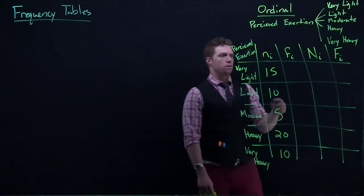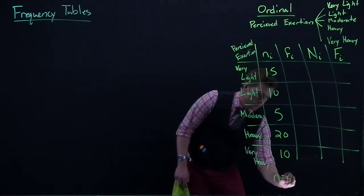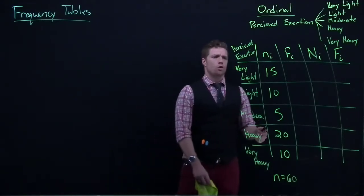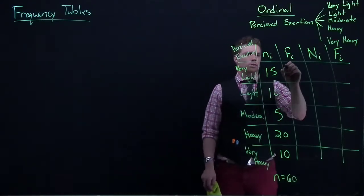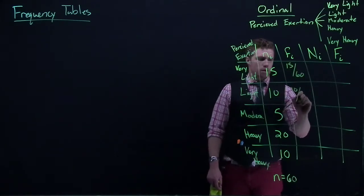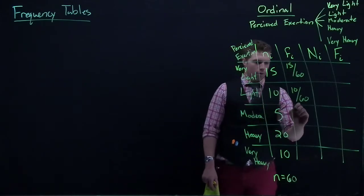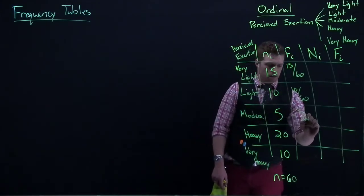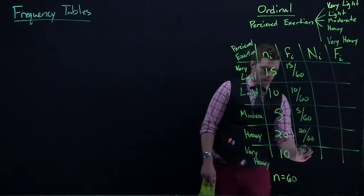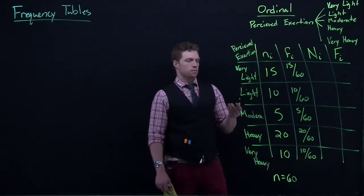So we've got our sample size again. Frequency, once again, we know this sample size of n equals 60. That's how many of the games maybe that this guy played in over the course of the basketball season. And so we'd do 15 divided by 60, 10 divided by 60. I'm just taking this number and dividing it by the sample size. So we've got 5 divided by 60, 20 divided by 60, and another 10 divided by 60.